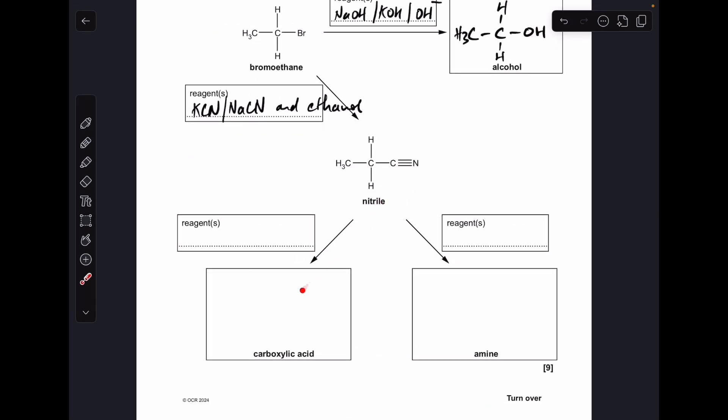We'll look at this reaction next, nitrile to carboxylic acid. To hydrolyse a nitrile you need an aqueous acid—you must specify aqueous—or you could say H+ and H2O. The carboxylic acid formed from that reaction is going to be this one here.